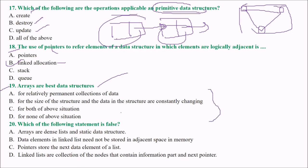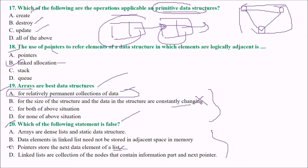Arrays are best structures for relatively permanent collections of data. For data that is constantly changing in size, arrays are not suitable. So the answer is A. Next: which of the following statements is false? Pointer stores the next data element of a list — this is false, because a pointer stores the address of the next node, not the data element itself. Arrays are dense lists and static data structures — correct. Data elements in a linked list need not be stored in adjacent memory — correct. So the false statement is C, and we take answer C. These were a few more MCQ questions on data structure; we will take more. Thank you.